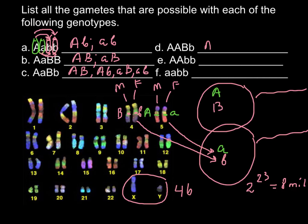D, we are going to get capital A capital B and capital A small b - just two variants. E, we are going to get capital A and small b - one variant.